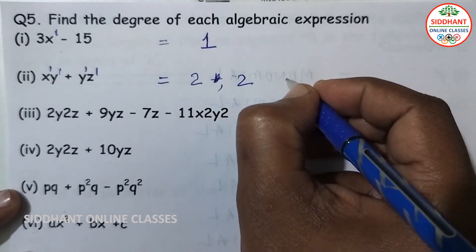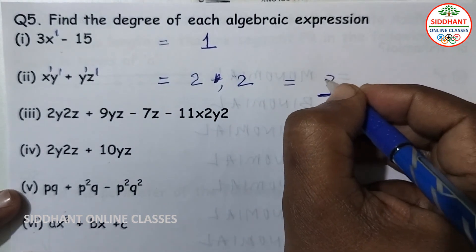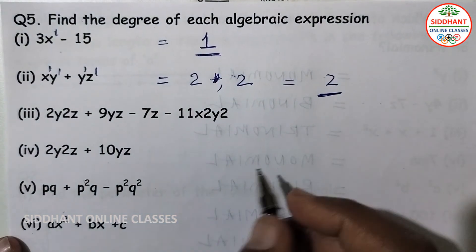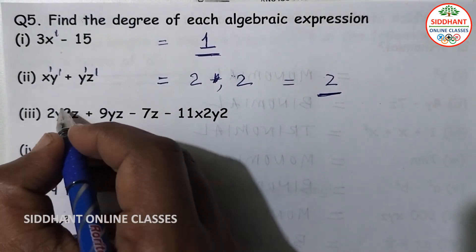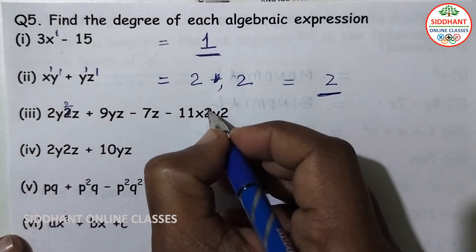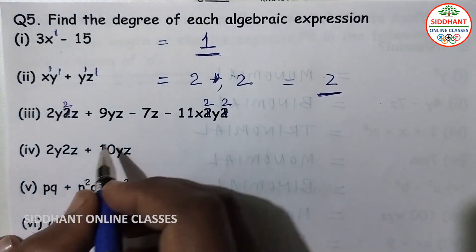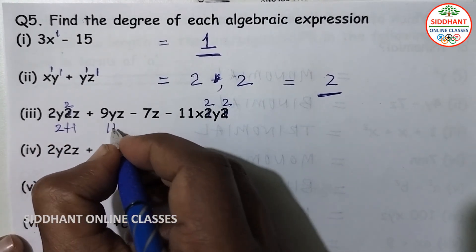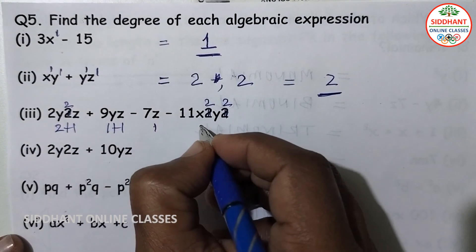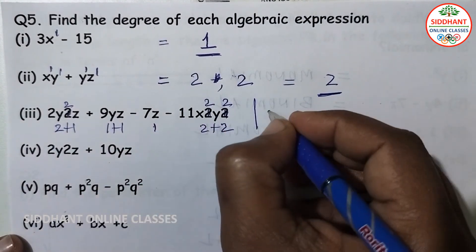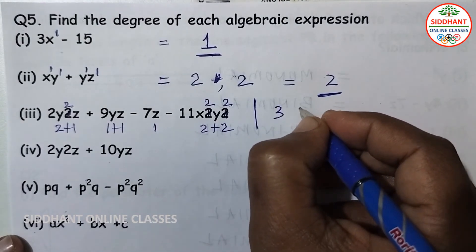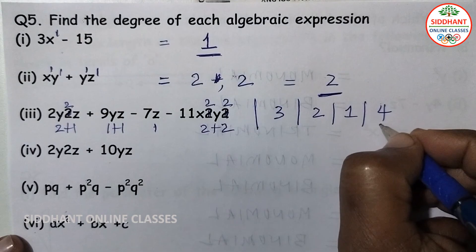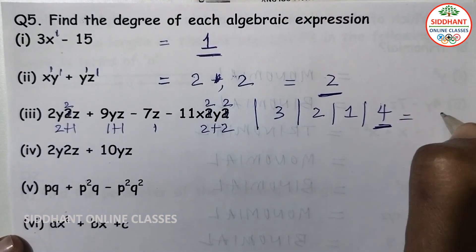The highest degree among the terms in the second expression is 2, so the degree of that algebraic expression is 2. For the third expression containing x square and y square z terms: degrees are 2, and 2 plus 1 equals 3. The highest degree is 3, 2, 2, 1, and 4 respectively — so the degree is 4.